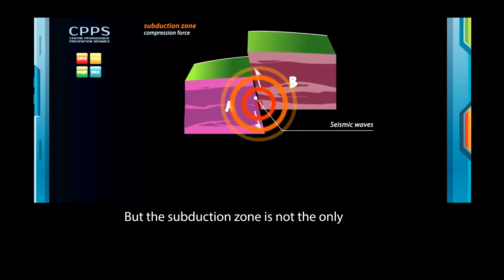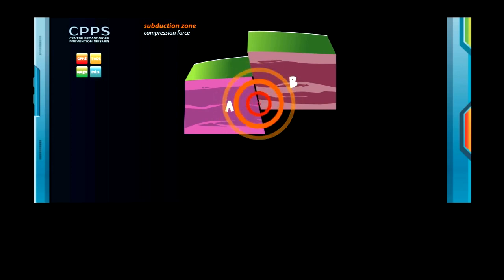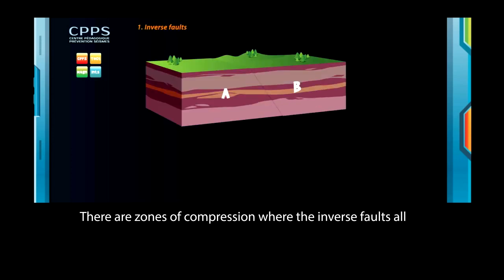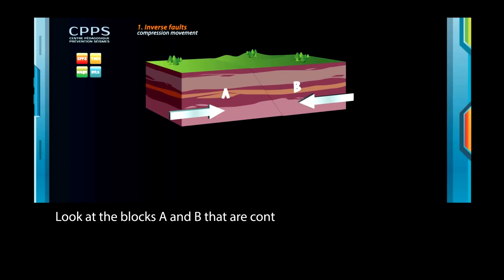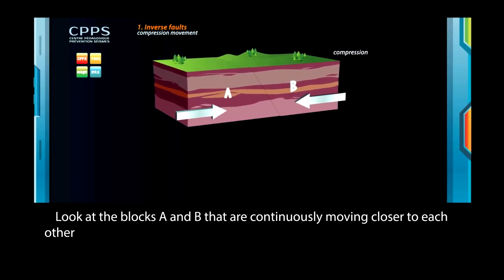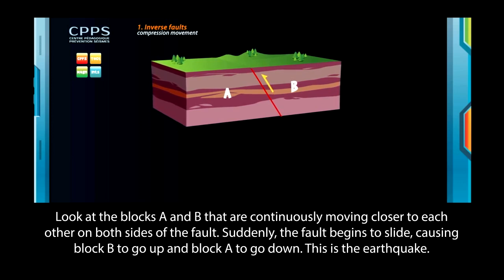But the subduction zone is not the only place where the plates move relative to one another. There are zones of compression, where the inverse faults allow the plates to converge with each other. For instance, the formation of the Alps. Look at the blocks A and B that are continuously moving closer to each other on both sides of the fault. Suddenly, the fault begins to slide, causing block B to go up, and block A to go down. This is the earthquake.